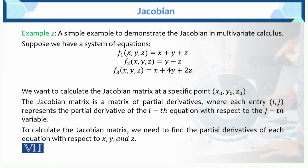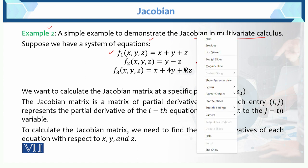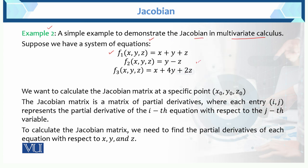Here is example number two. Now, that was with two variables. Here we are going to do a simple example to demonstrate the Jacobian in multivariate calculus. Suppose we have a system of equations — now here we have three equations and three variables x, y, and z. F1: x plus y plus z. Second equation: y minus z. And third equation: x plus 4y plus 2z.